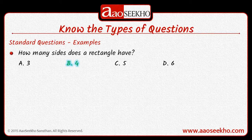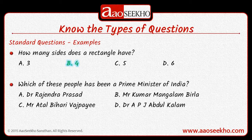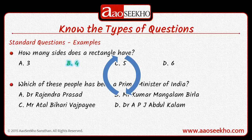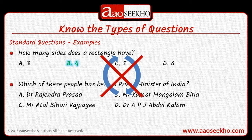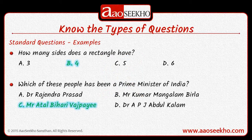Let's take another example. Which of these people has been a Prime Minister of India? Our options are Dr. Rajendra Prasad, Mr. Kumar Mangalam Birla, Mr. Atal Bihari Vajpayee, and Dr. A.P.J. Abdul Kalam. Here we see that the second question is completely unrelated to the first question. It does not matter whether we attempt the first question or the second question first. The answer is Mr. Atal Bihari Vajpayee.